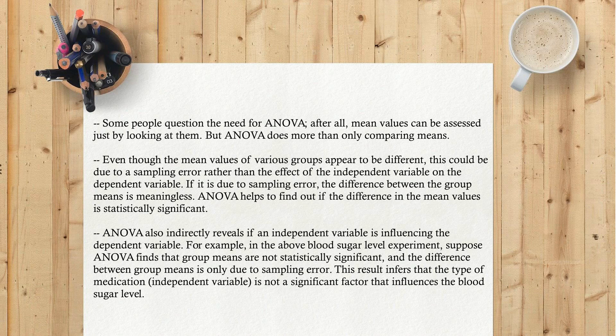ANOVA also indirectly reveals if an independent variable is influencing the dependent variable. For example, in the above blood sugar level experiment, suppose ANOVA finds that group means are not statistically significant, and the difference between group means is only due to sampling error. This result infers that the type of medication, the independent variable, is not a significant factor that influences the blood sugar level.